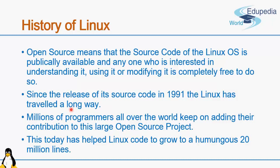Open source means that the source code of the Linux operating system is publicly available, so whoever is interested in understanding it, using it, or modifying it is completely free to do so. Since the release of its source code in 1991, Linux has traveled a long way. At that time when it was released, it was just a set of a few files. But millions of programmers all over the world kept adding their contributions to this large open source community-based project, and today this has helped Linux grow to a humongous close to 20 million lines of code.